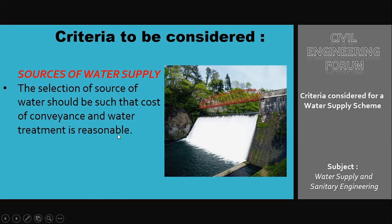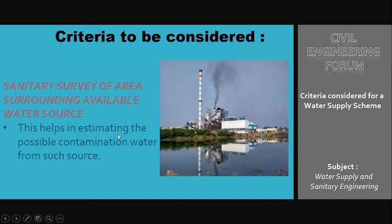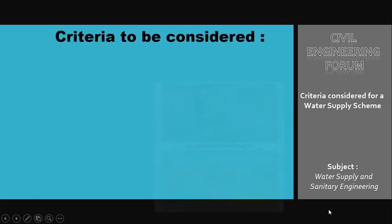After discussing sources of water supply, the next criteria is a sanitary survey of areas surrounding the available water source. This helps in estimating the possible contamination or pollution of water from such sources. The sanitary survey includes the collection of information regarding possible sources of water pollution, and this criteria basically deals with cleanliness.